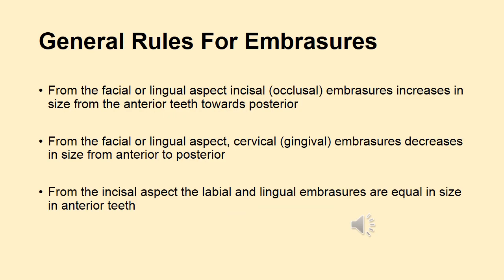Now there are some general rules for embrasures. The first rule is from the facial or lingual aspect, the incisal embrasure increases in size from anterior towards the posterior teeth. The second rule is from the facial or lingual aspect, the cervical embrasure will decrease in size as you move from anterior teeth towards the posterior teeth.